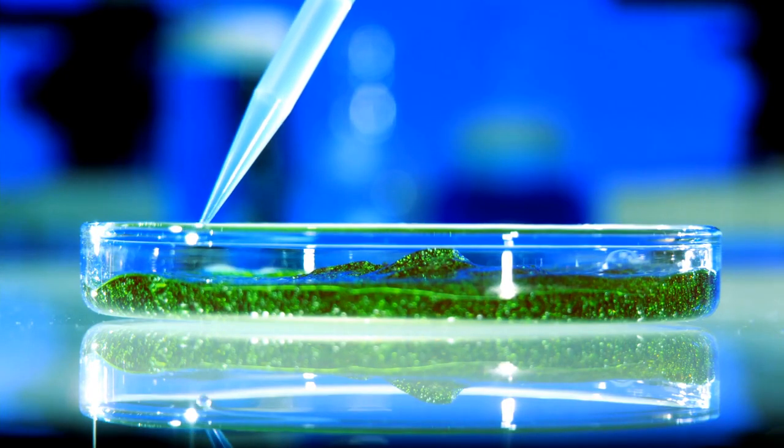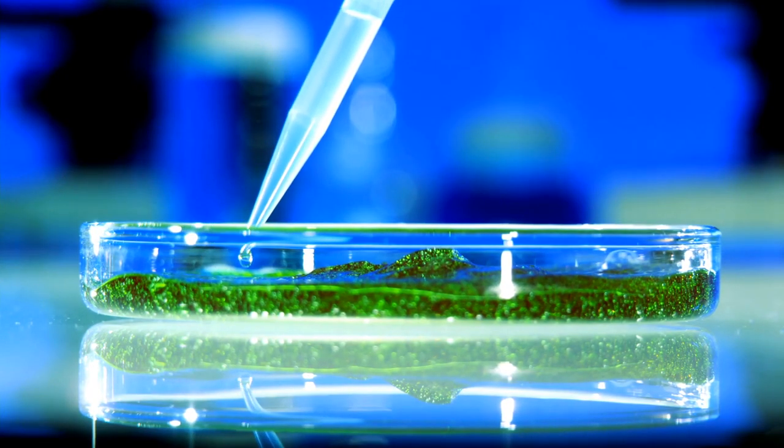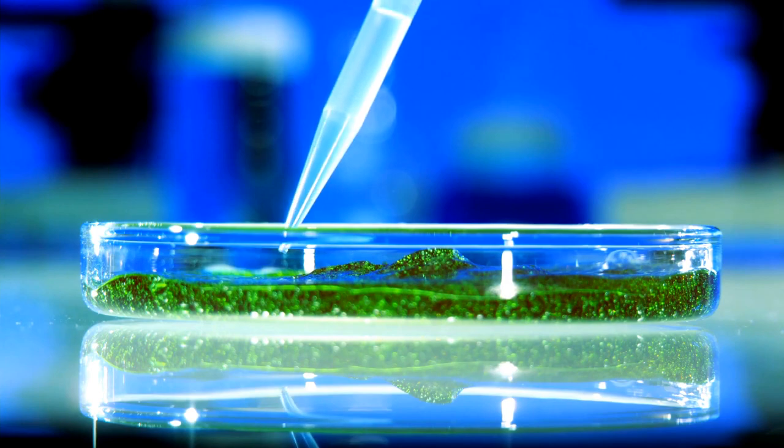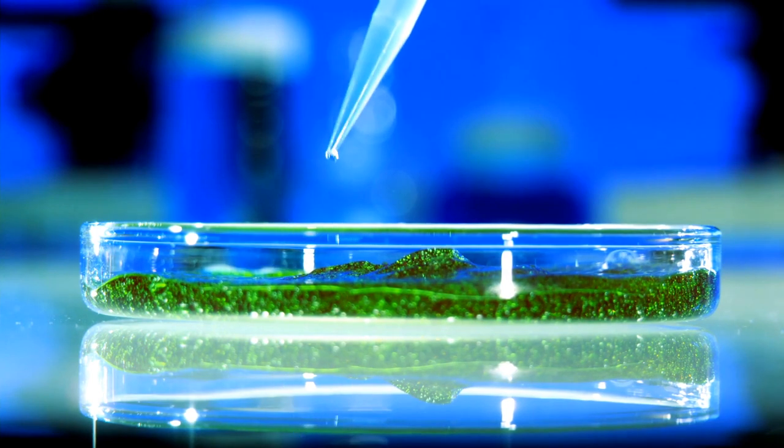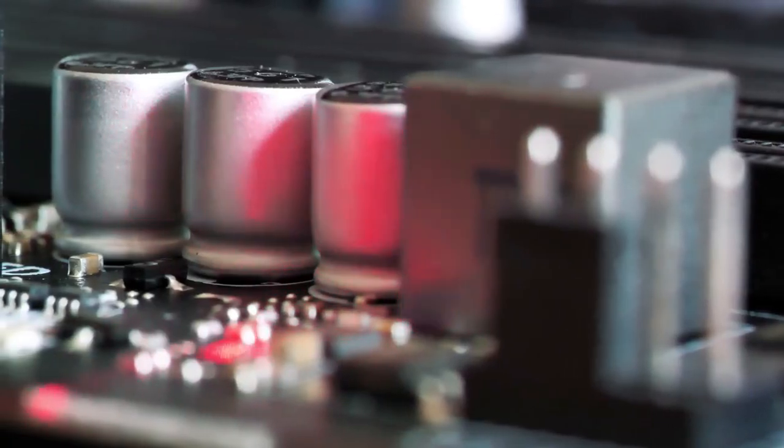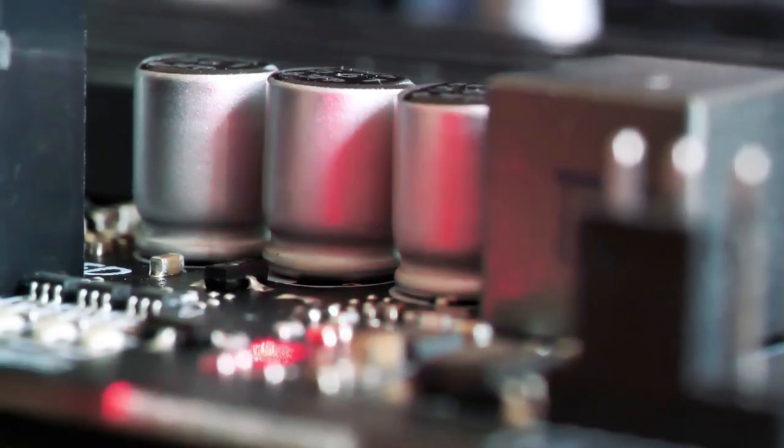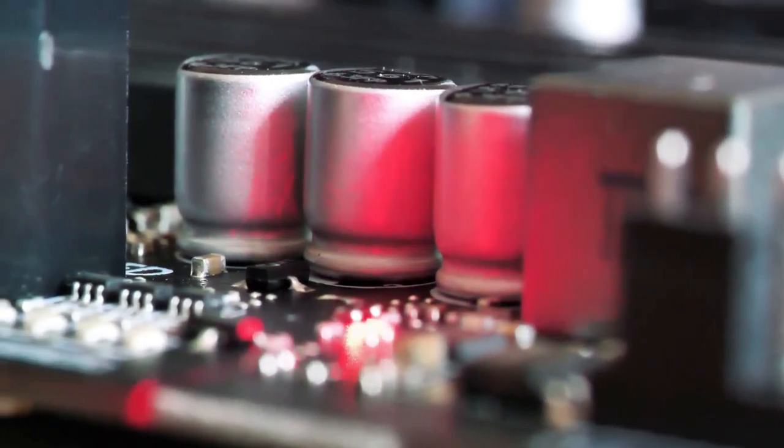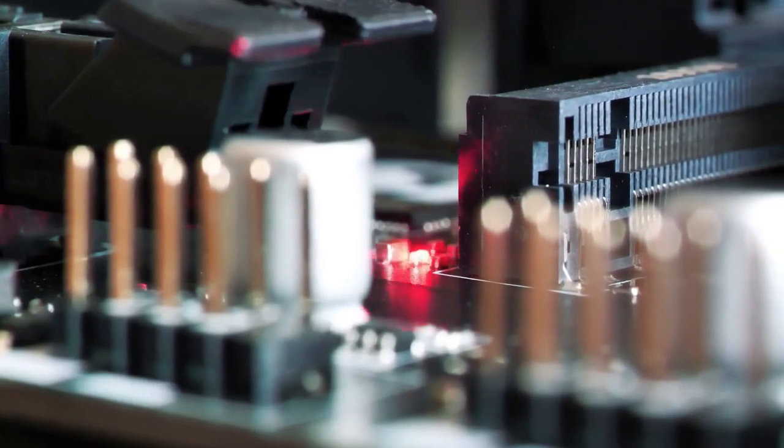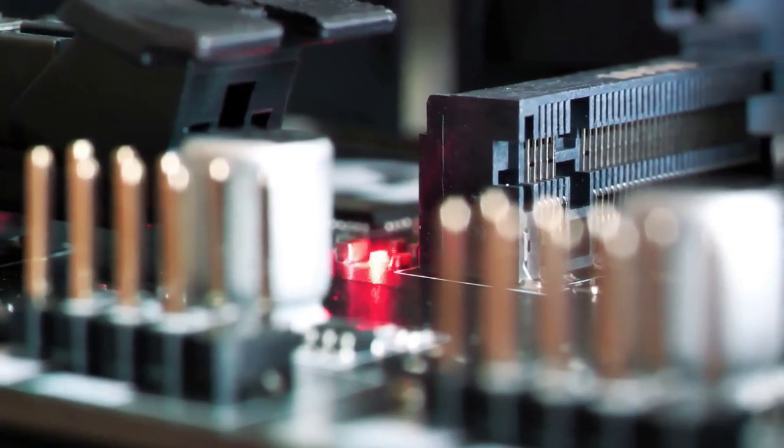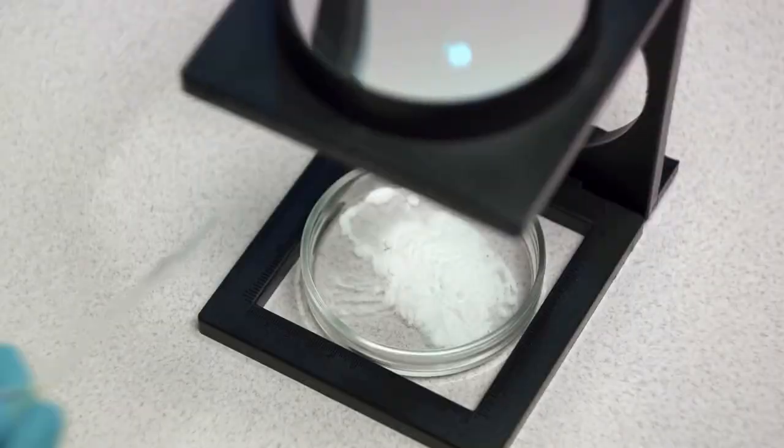These microscale devices are often fabricated using soft lithography, a technique borrowed from the microelectronics industry. This involves creating a mold with the desired microchannel design, then casting a liquid polymer, like silicone, onto the mold. Once the polymer hardens, it forms a flexible, transparent device with intricate microchannels.